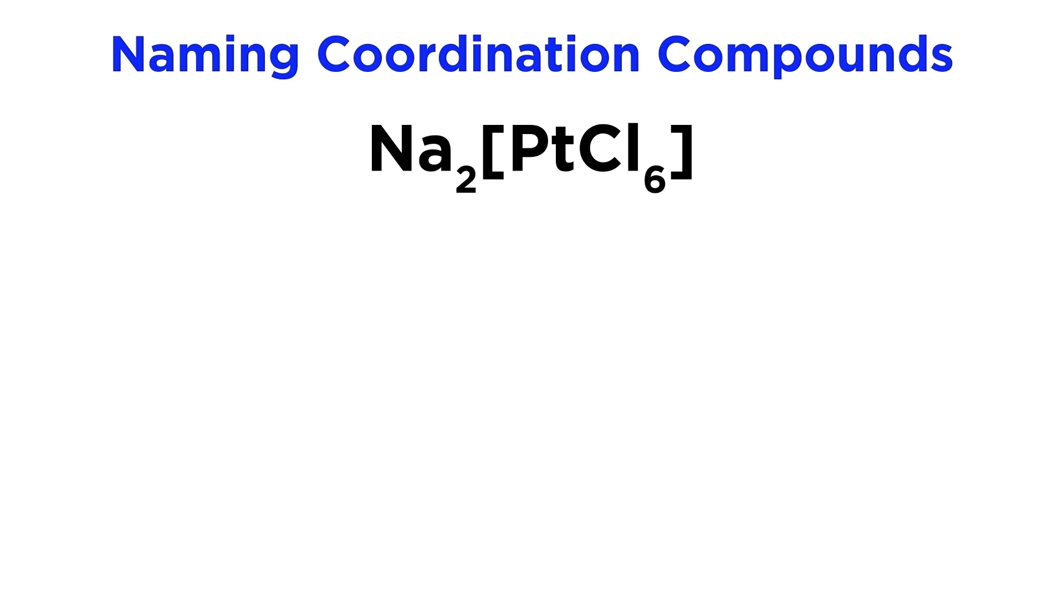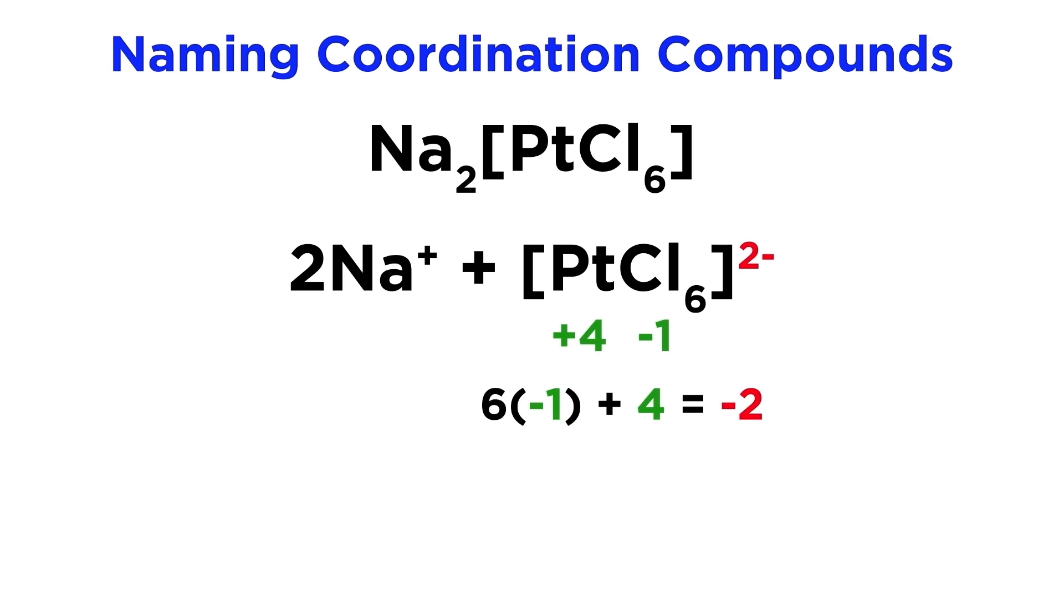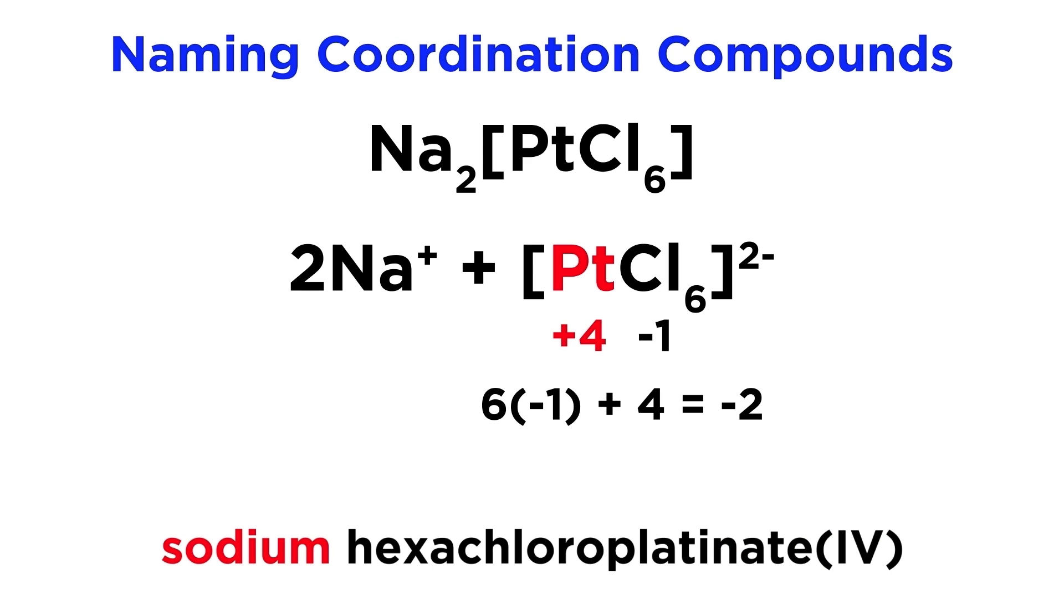Let's try an example, Na2PtCl6. First, let's assess the charges. Sodium ions are plus one, so that's a total of plus two, meaning the complex itself has a minus two charge as a whole. Each chloro group is minus one, so six minus ones will need a plus four on the platinum to get to minus two, so platinum must have an oxidation state of plus four. Now we just list everything. Six chloro ligands gives us hexachloro, then platinate with the Roman numeral four, remembering that because it's an anion, we use the suffix -ate, and then sodium at the beginning to list the counter ions.